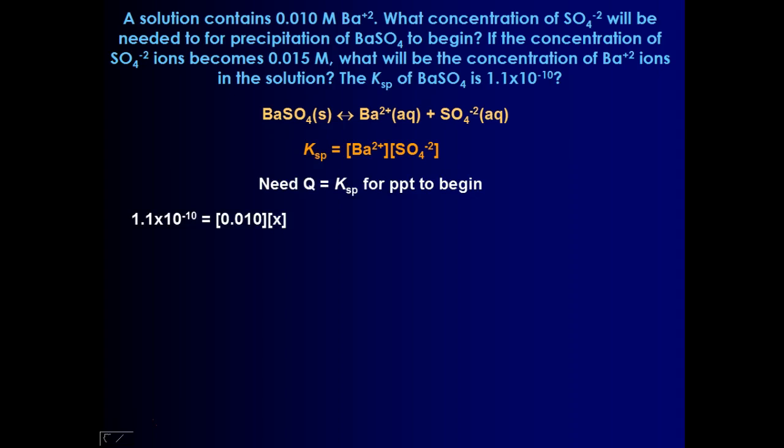1.1 times 10 to the negative tenth was our Ksp for barium sulfate. It's a fairly insoluble compound, and you've got your barium, the 0.01 molar, and we can solve for sulfate. And when you go through and do the math, you should get that sulfate's concentration is 1.1 times 10 to the negative eighth. So very little sulfate will need to be added to your mixture for precipitation to occur.